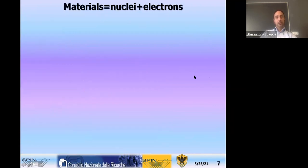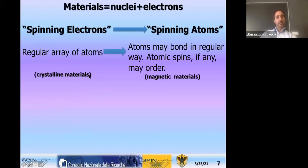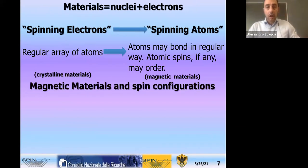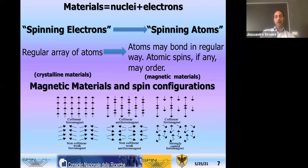From spinning electrons we go towards spinning atoms. Materials are nuclei plus electrons. Crystalline materials are a regular array of atoms. If there are atomic spins, they may order and give rise to magnetic materials. Here I show some spin configurations — just a set of arrows. At the end of this lecture we should be able to get more confidence with these arrows and how we compute them by computational magnetism.